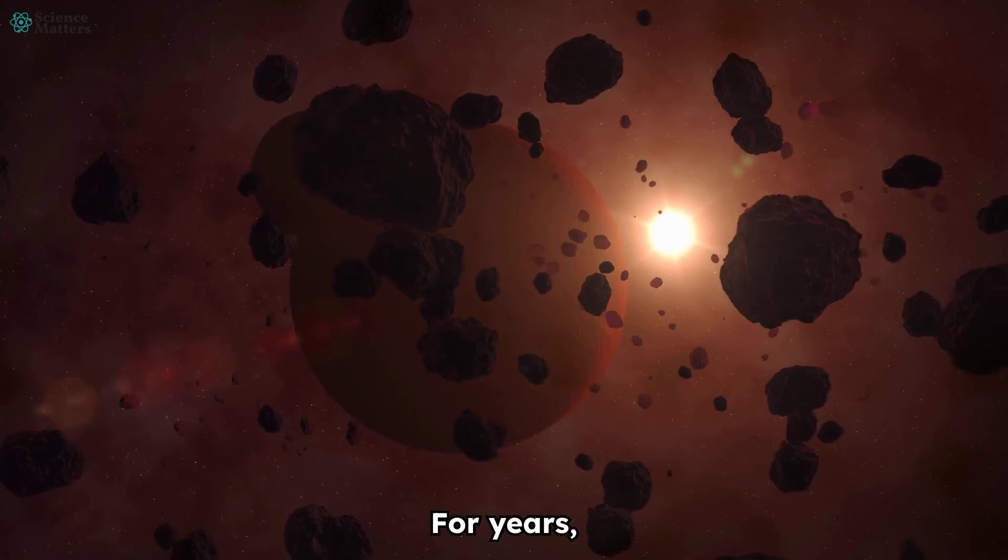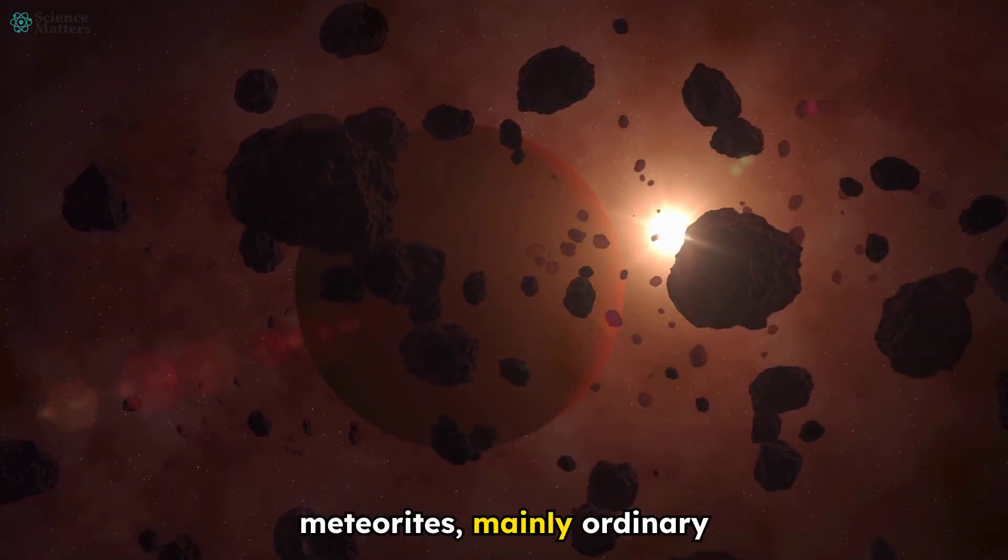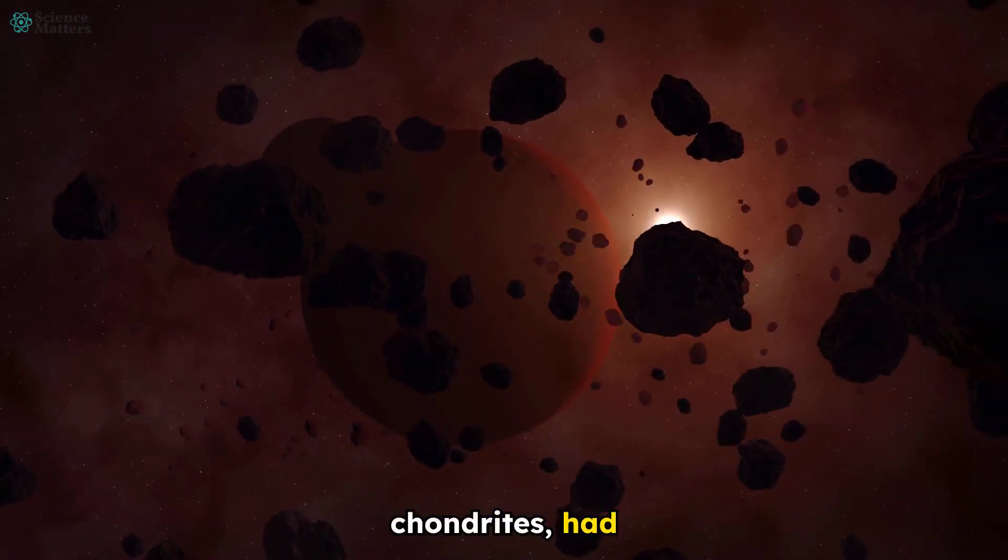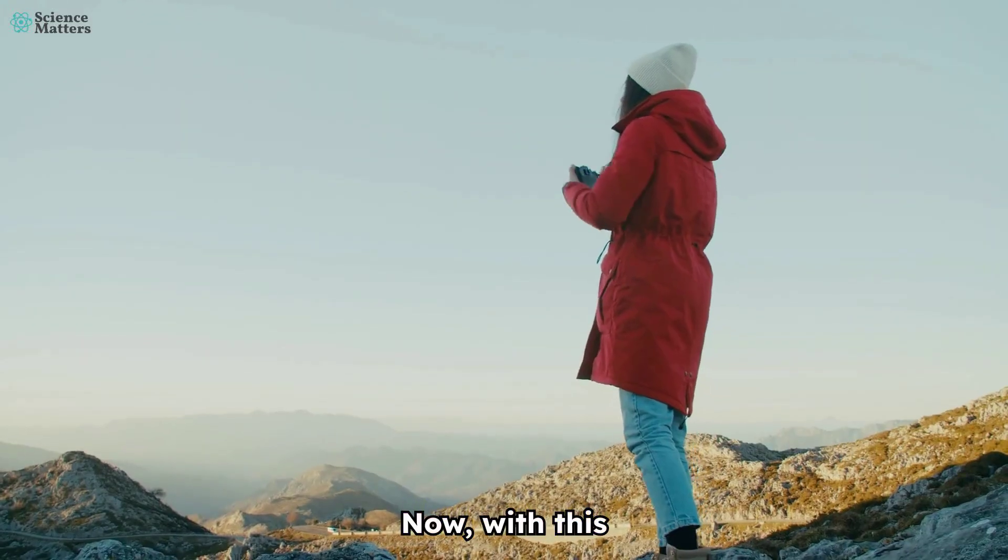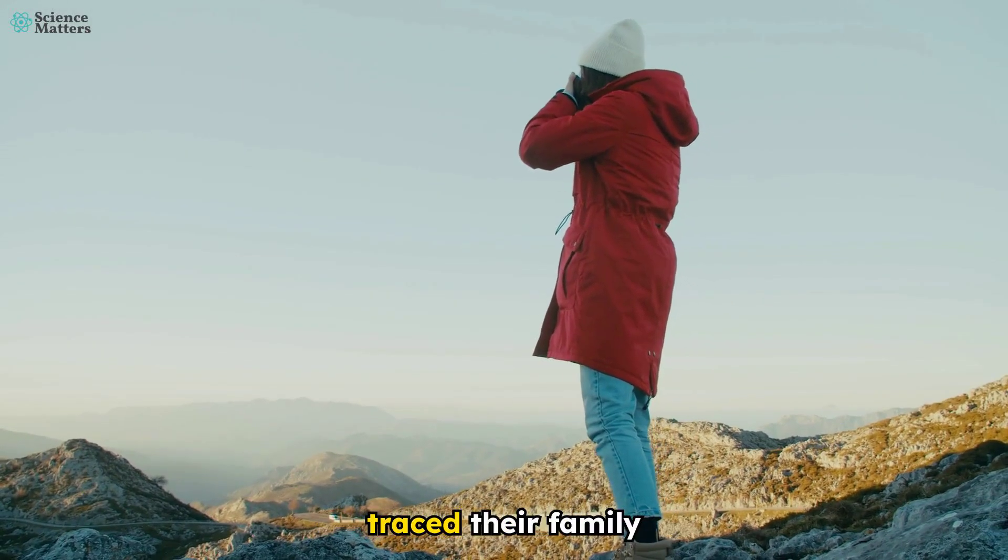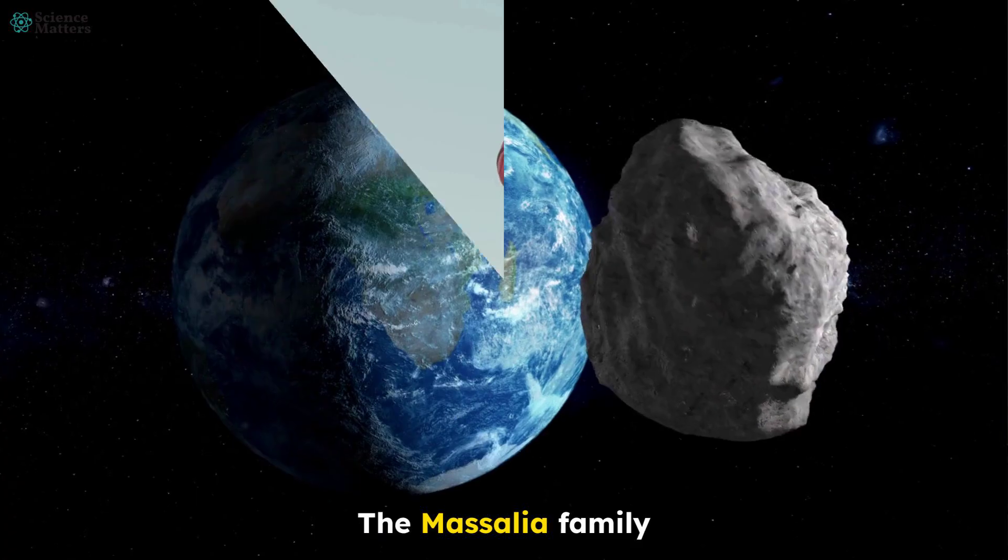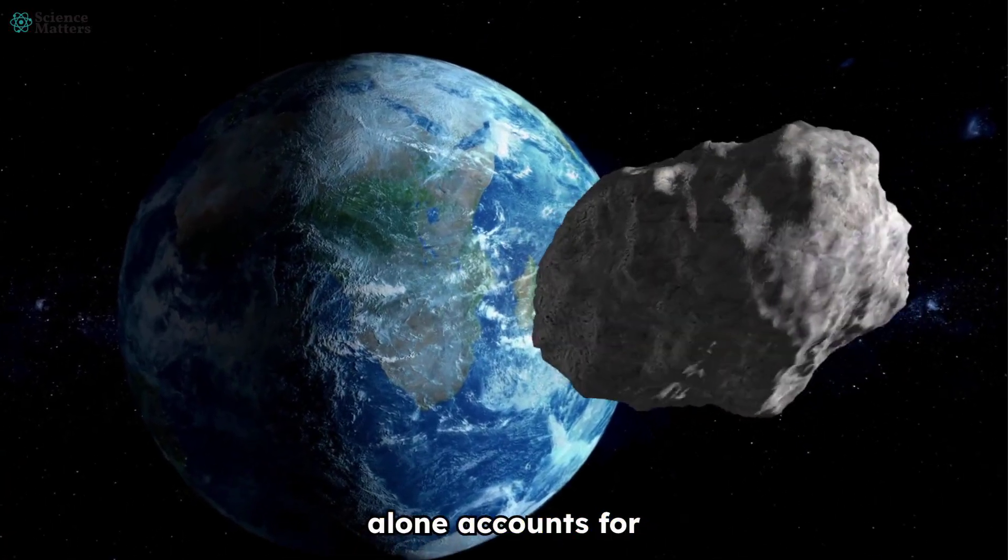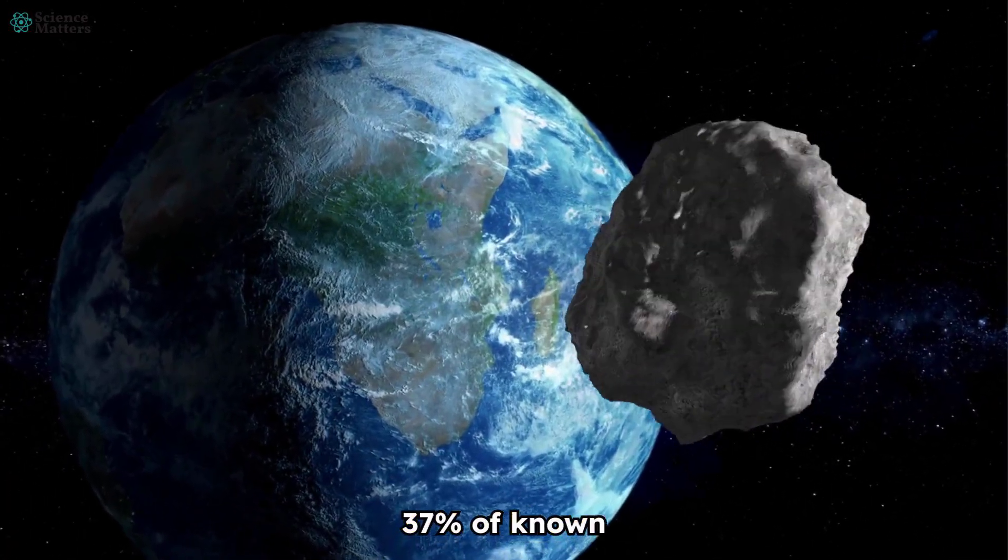For years, 94% of meteorites, mainly ordinary chondrites, had mysterious origins. Now, with this discovery, scientists have traced their family tree. The Massalia family alone accounts for 37% of known meteorites.